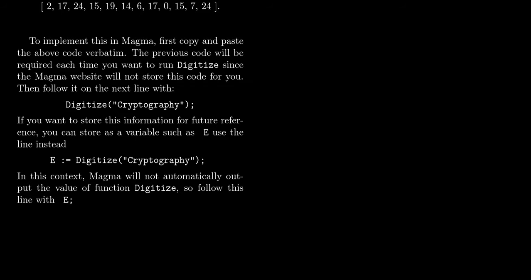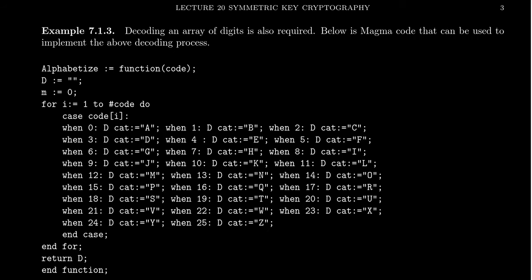We also have to be able to convert numbers back into letters. If I do the inverse map to our digitization function, we'll call this alphabetize. This will accept an array of numbers, the code, and it'll convert them back to letters. If you see the number zero, that means it's an A. If you see the number one, that's the letter B. If you see the number two, that's the letter C. Just reversing the process. This is the inverse operation to digitize that we saw before.